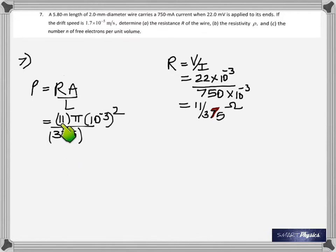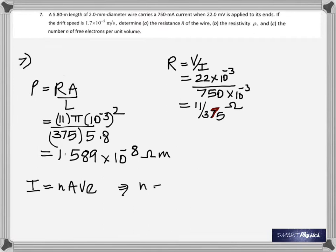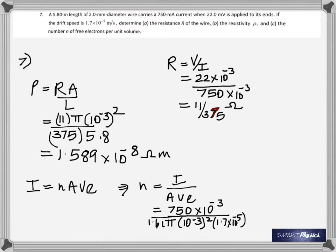The area of cross section is pi r squared, length is 5.8, so you get 1.589 times 10 to the negative 8 ohm meter. And then to find the number of electrons, we use this formula: I equals n A v e. Make n the subject, substitute. Current is 750 milliamperes, you have the area of cross section is pi r squared, drift velocity is given 1.7 times 10 to the negative 4 meters per second, and then multiply with the charge of the electron.